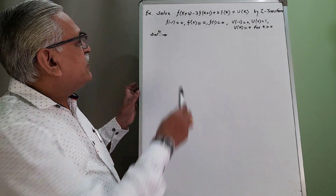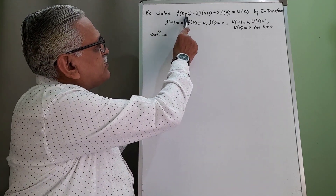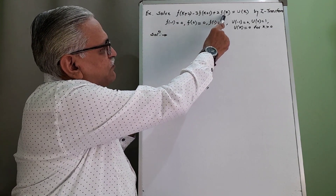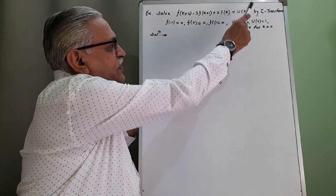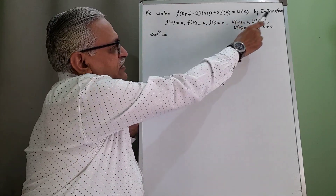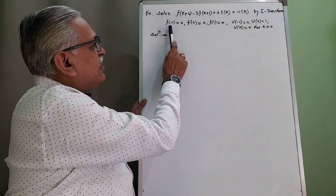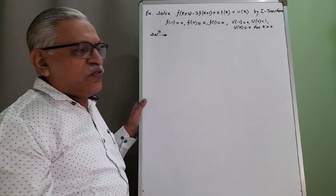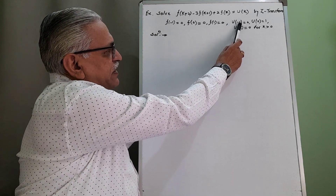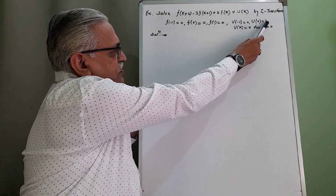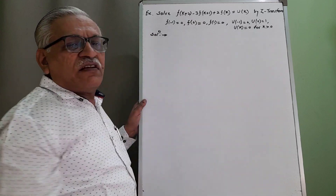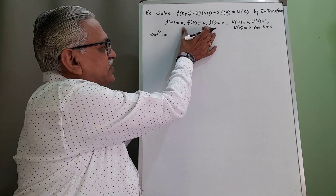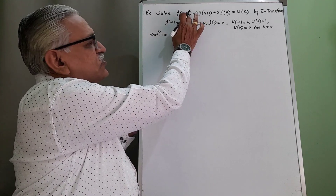The given difference equation is f(k+2) minus 3·f(k+1) plus 2·f(k) equals U(k), solved by J-Transform with initial conditions: f(−1)=0, f(0)=0, f(1)=0, u(−1)=0, u(0)=1, and u(k)=0 for positive values of k. Using these conditions, we try to solve this problem.